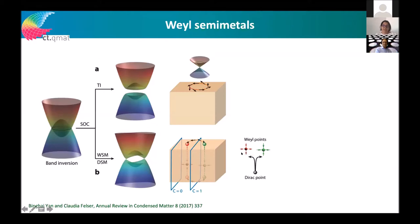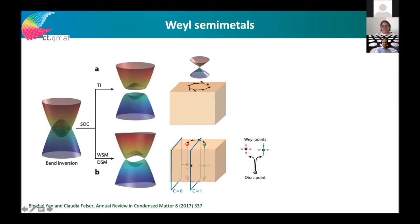In Weyl semimetals we find crossing points at lower symmetry points, so they are much more difficult to find. We can turn a Dirac semimetal into a Weyl semimetal by straining it — breaking inversion symmetry — or by applying a magnetic field, breaking time reversal symmetry. The Weyl points are kind of magnetic monopoles and show many more interesting properties than even Dirac semimetals; these monopoles exist in the bulk electronic structure of our crystals.